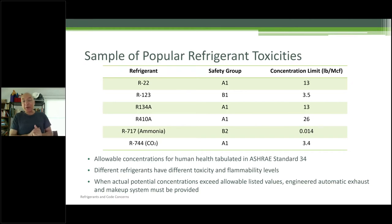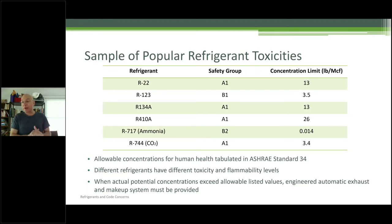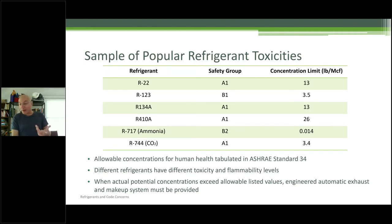CO2 — R744 — is an A1. Obviously CO2 is not flammable and is considered non-toxic. But the concentration limit is much lower than 410A — it's 3.4 pounds per 1,000 cubic feet. So that's something to worry about with the introduction of new machines running on CO2. All refrigerants are listed in ASHRAE 34 with their different toxicity and flammability levels.